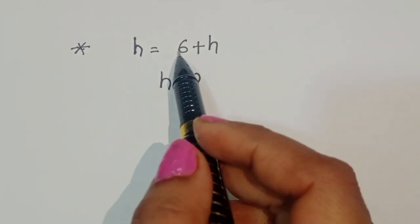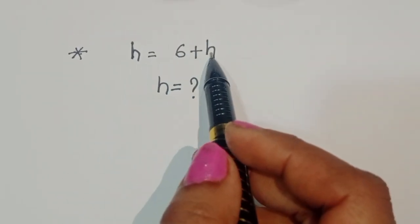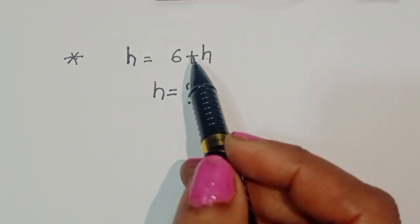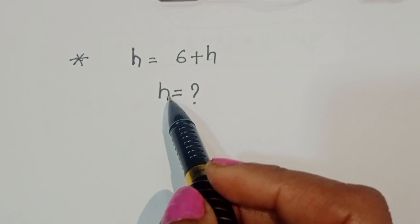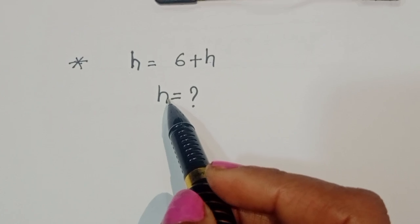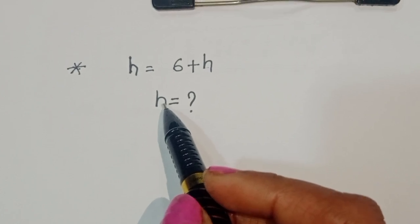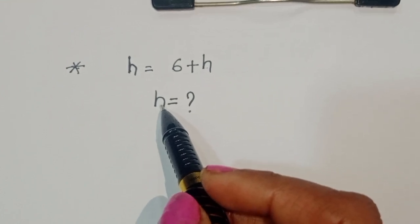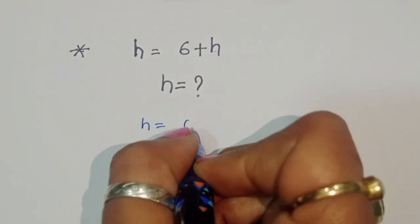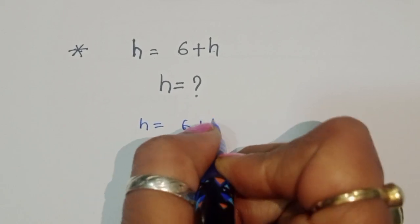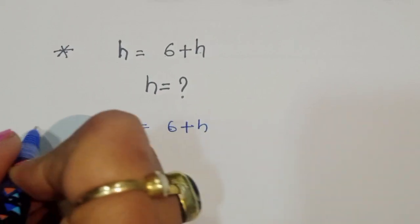Given h is equal to √(6 plus h), we have to find out the value of h. Let's see the solution: h is equal to √(6 plus h).